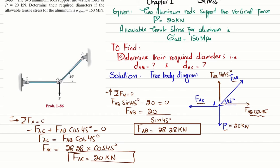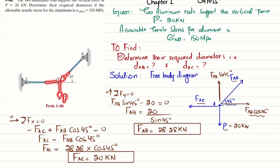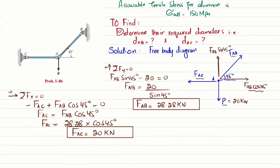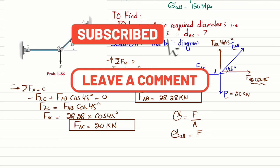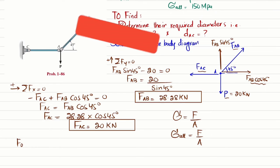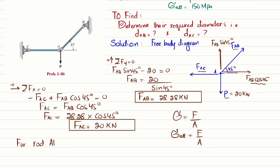The force in member AC at point A is 20 kilonewtons. These are the forces exerted by each member on point A. By Newton's third law, the applied load P causes tensile stresses in these rods. We know that stress equals force per unit area. We have been given that the allowable tensile stress is 150 megapascals.